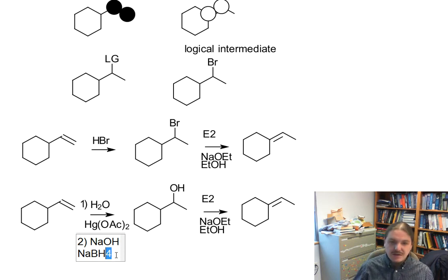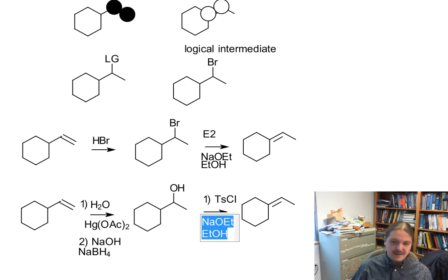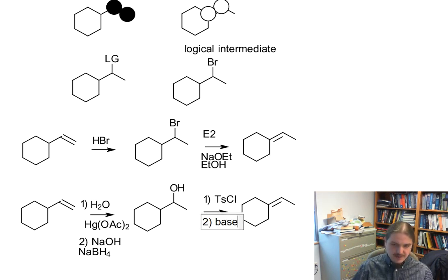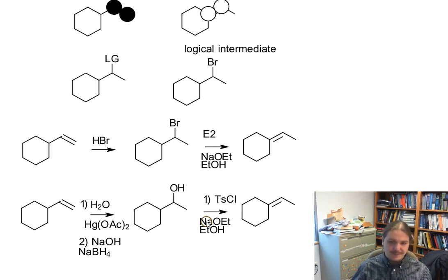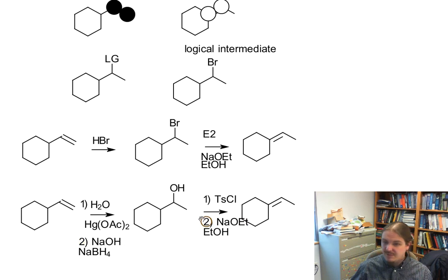We can change how we do our elimination to a way that takes care of the alcohol by first converting it to the tosylate, and then choosing to do essentially the same E2 elimination that we'd have done before. So ultimately, there are a couple of ways.